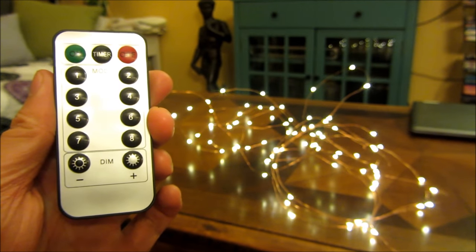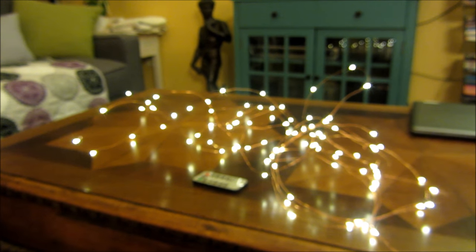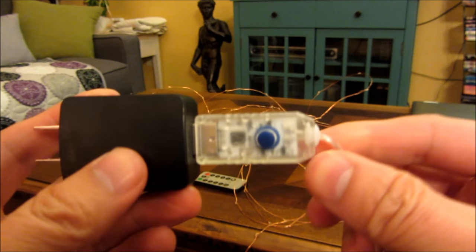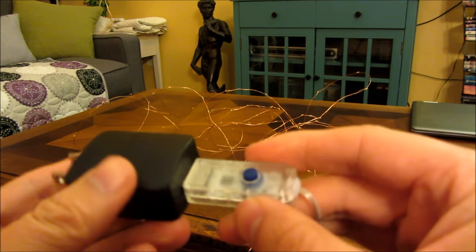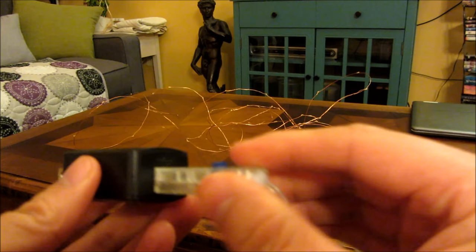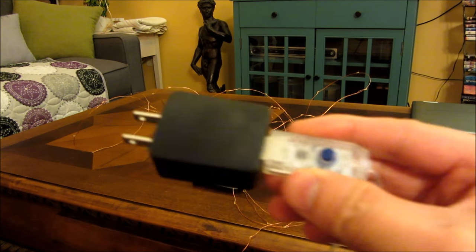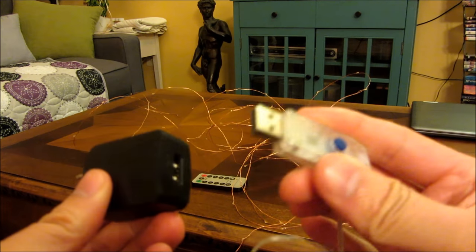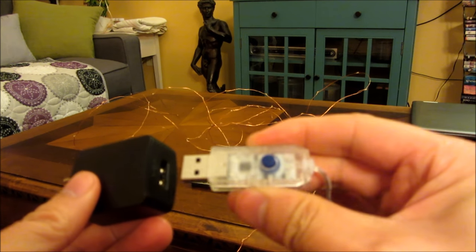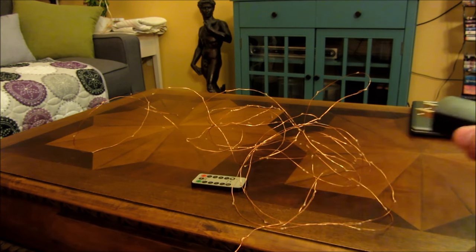Let me give you an up close of the lights itself. So this does come with its own on-off switch here when you plug it in. You'll have to aim the remote control right on this switch to turn it on. This is a USB, so you could plug it into any USB adapter that you have also.